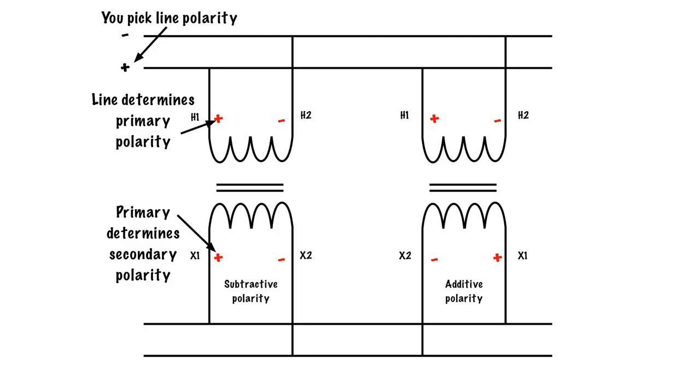So here we go. Remember that with the rule of transformers, H1 and X1 are always going to be the same polarity. So here we've got H1 is positive, so X1 is going to be positive, which means that if H2 is negative, X2 is negative.